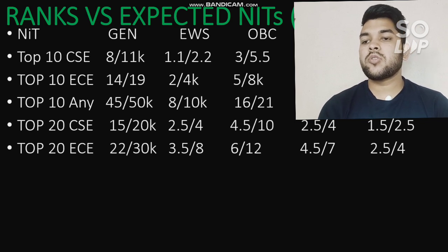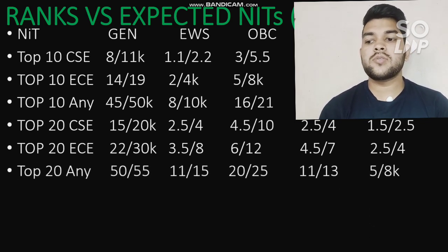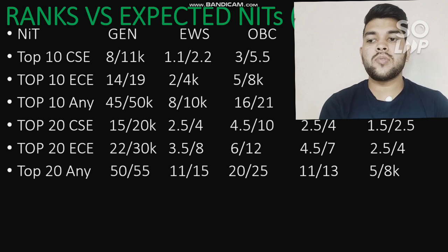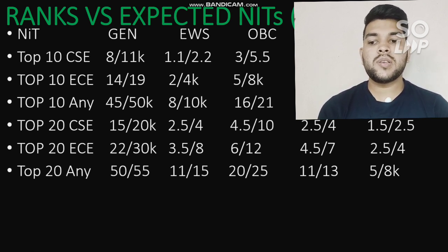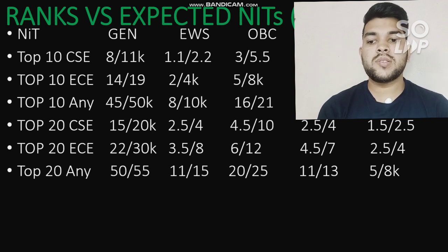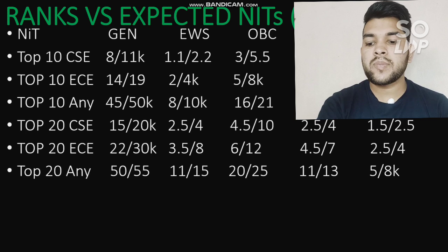For top 20 NITs with any possible branch: General category ranks are 50,000 and 55,000 for male and female; EWS 11,000 and 15,000; OBC 20,000 and 25,000; SC 11,000 and 13,000; ST 5,000 and 8,000.